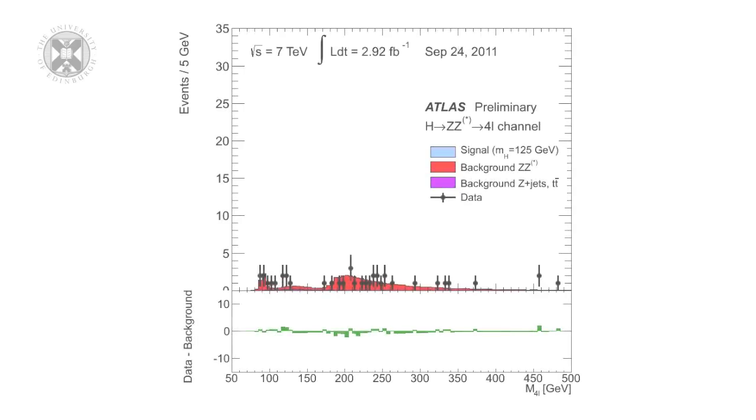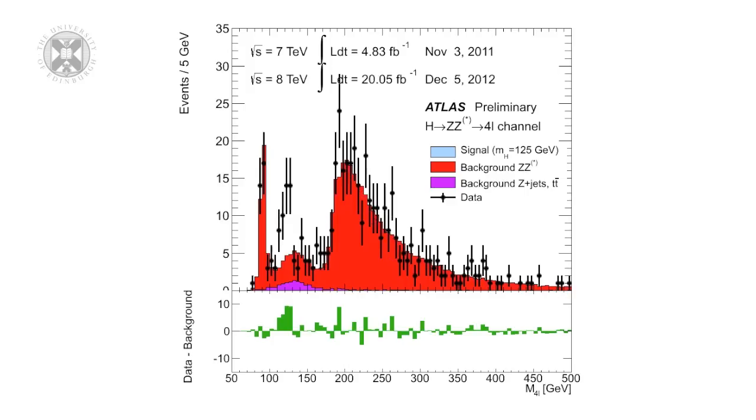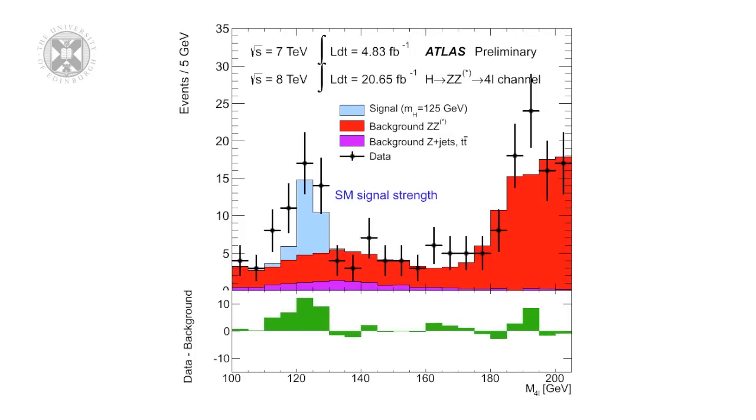This is a similar plot from what we call a different decay channel, in which the reconstructed mass is calculated by combining four electrons together. This channel has a much more complex background, indicated with the red and the purple colors. It is almost impossible to spot the Higgs unless you look at the bottom, background subtracted plot. And again, not only can you see a clear peak, but it is at the same place that it was in the two photon plots shown before, around 125 GeV.